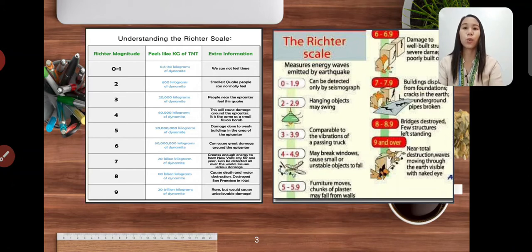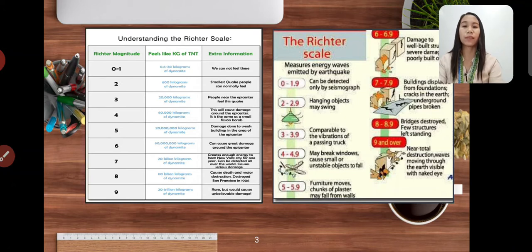6 to 6.9 damage to global structures, severe damage. 7 to 7.9 buildings displaced from foundation, cracks in the earth, underground pipes broken. 8 to 8.9 bridges destroyed, few structures just left standing.